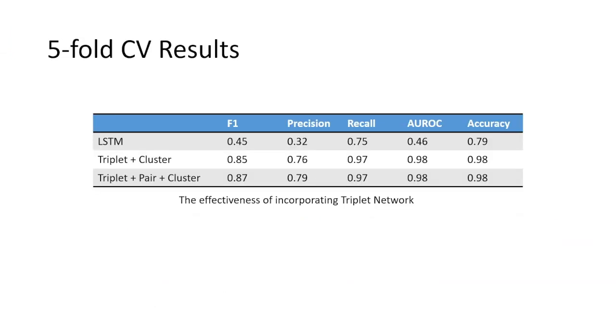The first table presents an analysis of the effects of integrating a pair network, complete with pair loss, in conjunction with a triplet network. The results reveal that our approach outperforms the conventional LSTM model. The integration of the pair network with the triplet network demonstrates a substantial enhancement across all measured metrics.